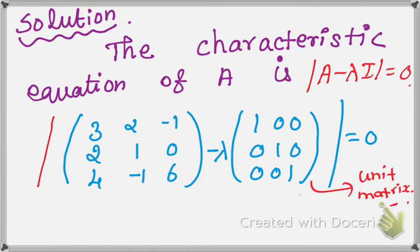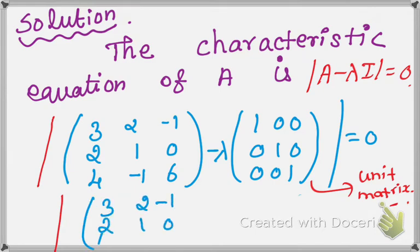Now, multiply lambda inside the identity matrix to simplify. The first term A has no changes: [3, 2, -1; 2, 1, 0; 4, -1, 6]. Next, multiply lambda inside the identity matrix.